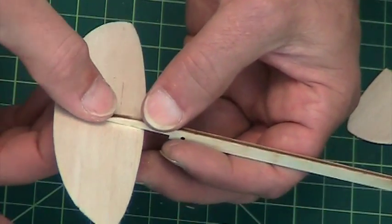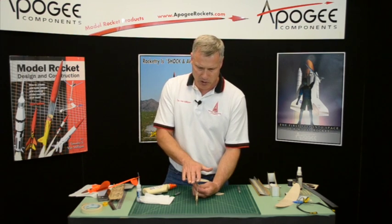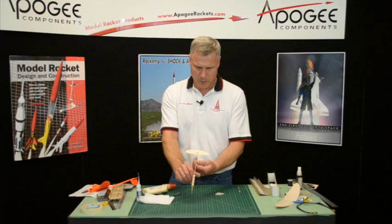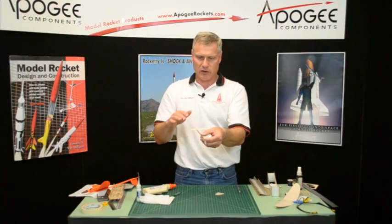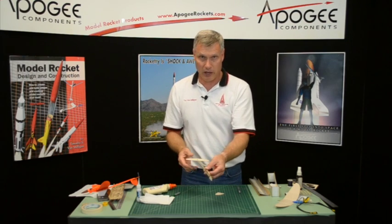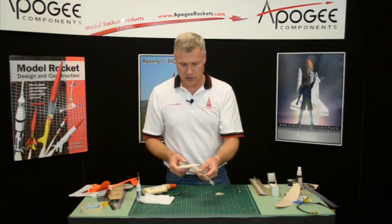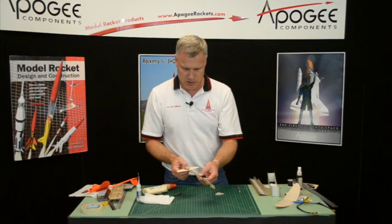Now you do want to check this and make sure that it's perfectly perpendicular to the boom. Go ahead and just kind of hold it up and sight along, make sure that it's not tilted one way or the other. That's bad, because that's going to basically cause the rocket to turn and we want it to go nice and straight.